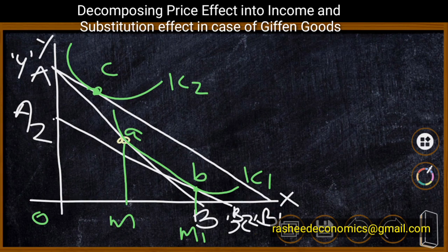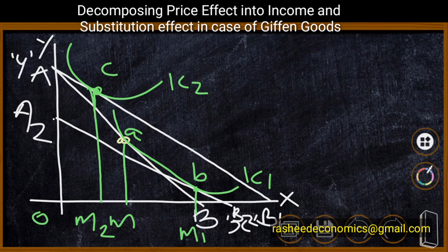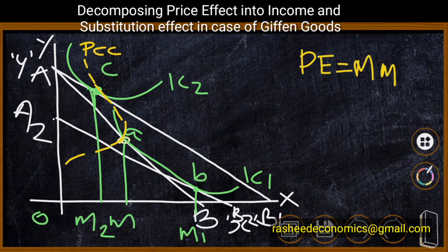Therefore, movement from A to B is the substitution effect, movement from A to C is the price effect, and movement from B to C is the income effect. The final consumption level is OM2, whereas the initial consumption was OM. Consumption has decreased from OM to OM2 — that is, MM2 is the decrease — and this happens as a result of the negative price effect. By joining points A and C we can derive the price consumption curve, which is backward bending.